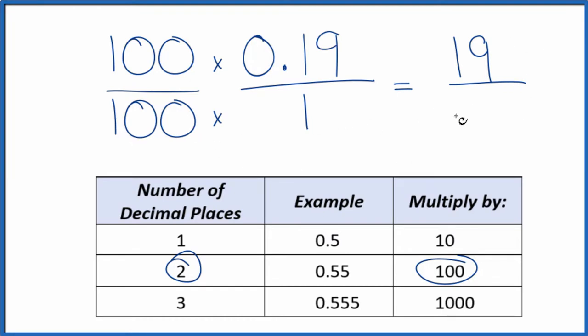So 100 times 1 equals 100. And we've converted the decimal 0.19 to a fraction. It's 19 over 100. If you divide 19 by 100, you get 0.19.